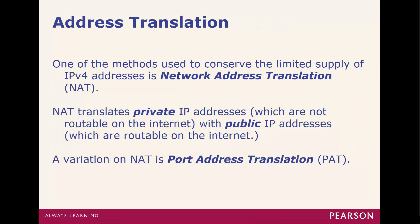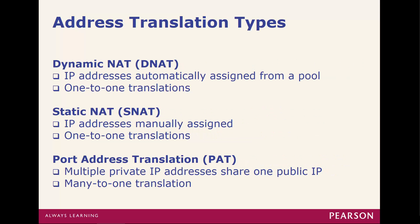Moving on to address translation. Because of the limited supply of IPv4 addresses, we needed a way to mask private addresses so they could get on the internet. What we came up with was network address translation, NAT. It allows us to mask one public IP address to several private IP addresses. One variation of NAT is port address translation, PAT, which is based off the port. Other examples include dynamic NAT, where the IP address is automatically assigned from a pool in a one-to-one translation, or static NAT where IP addresses are manually assigned one-to-one. PAT is where multiple private IP addresses share one public IP address — a many-to-one translation.